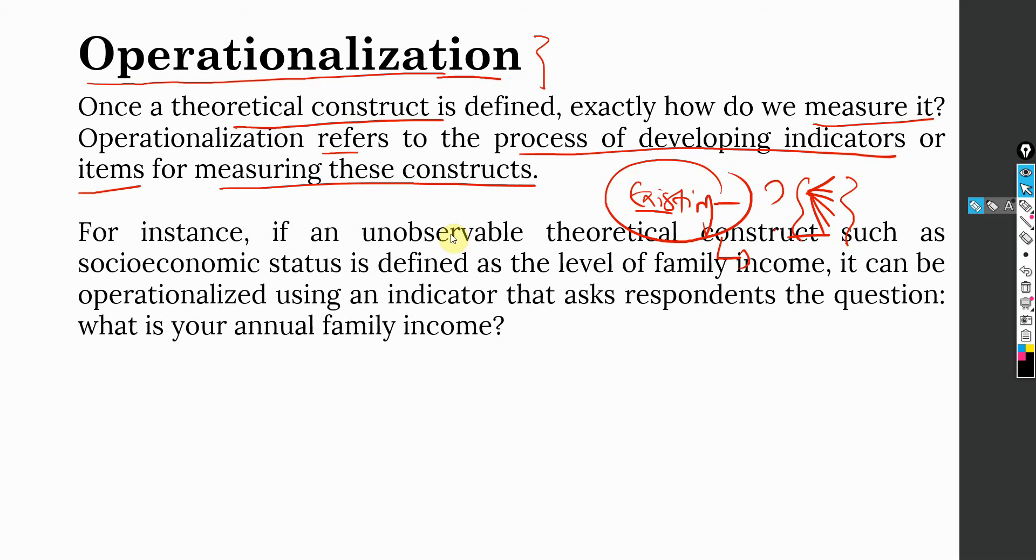For instance, if an unobservable theoretical construct, that is your latent construct, such as socioeconomic status, is defined as the level of family income, it can be operationalized using the indicator that asks respondents the question: what is your family income? What is included in socioeconomic status? Family income. So this is what is included in socioeconomic status. How do you operationalize it? You simply ask this question: what is your annual income?